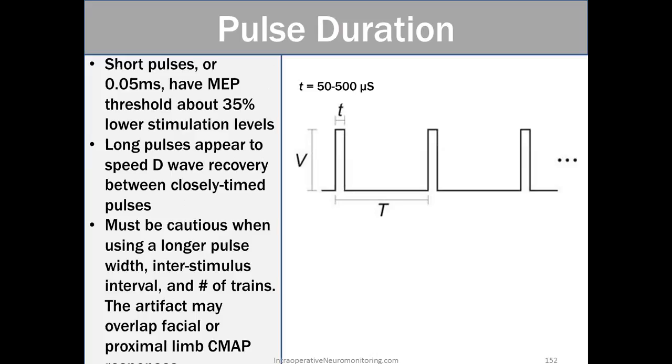Pulse duration. Short pulses or 0.05 milliseconds have MEP thresholds about 35 percent lower stimulation levels. Longer pulses appear to speed D-wave recovery between closely timed pulses. Must be cautious when using a longer pulse width, inner stimulus interval, and number of trains. The artifact may overlap the facial or proximal limb muscles like we saw in that last picture.